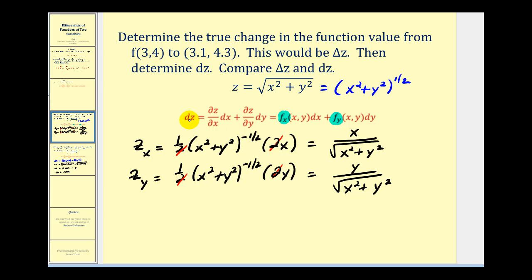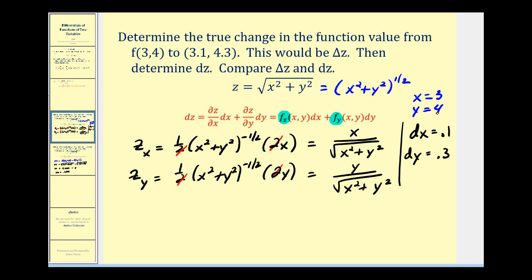To calculate differential z, we also need dx and dy. Since x changes from three to three point one, dx equals positive point one. Since y increases from four to four point three, dy equals point three. Also, x equals three and y equals four. So differential z equals the partial with respect to x evaluated at the point, times dx: that's three over the square root of three squared plus four squared, which is the square root of twenty-five, giving us three-fifths times dx, where dx is one-tenth.